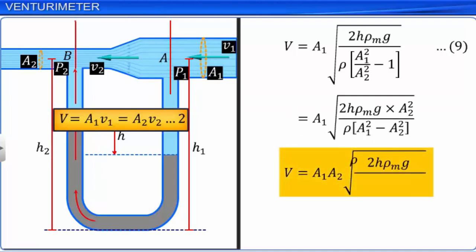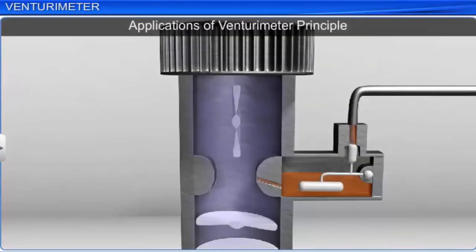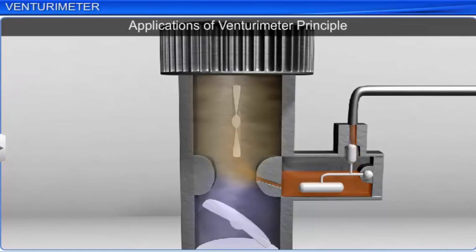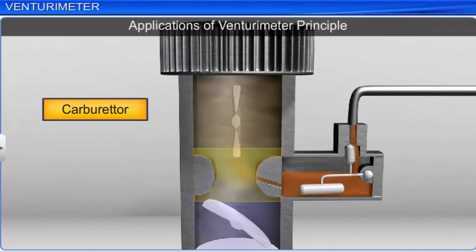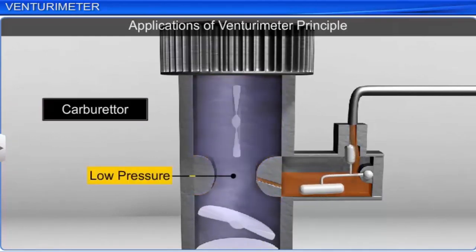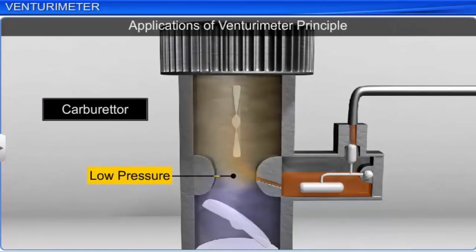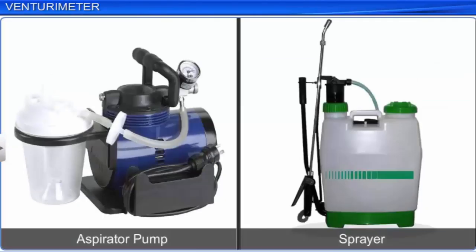The principle behind the venturimeter finds many applications. The carburetor of an automobile has a venturi channel through which air flows at high speed, lowering the pressure and sucking petrol into the chamber to provide the correct air-to-fuel mixture for combustion. Other devices working on this principle include aspirator pumps and sprayers used to spray insecticides.